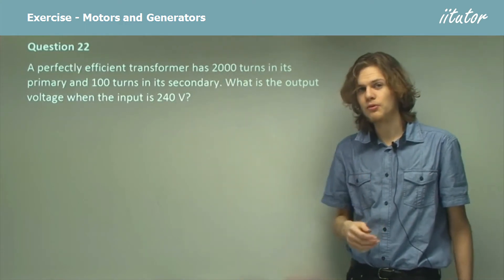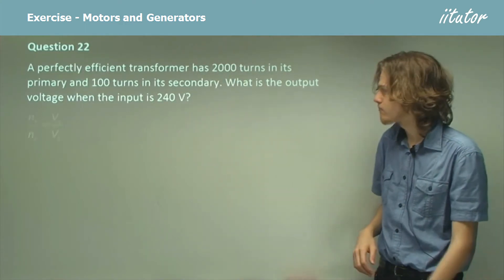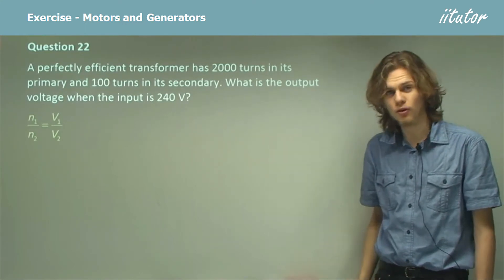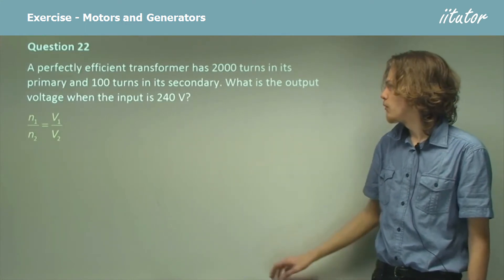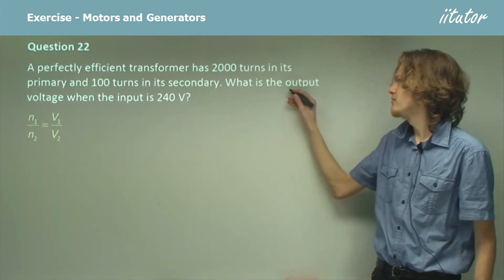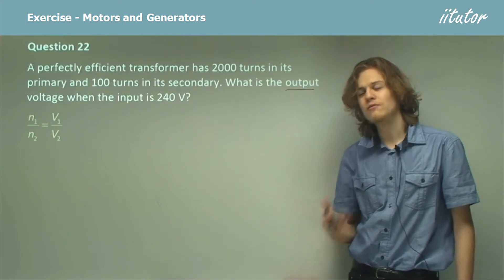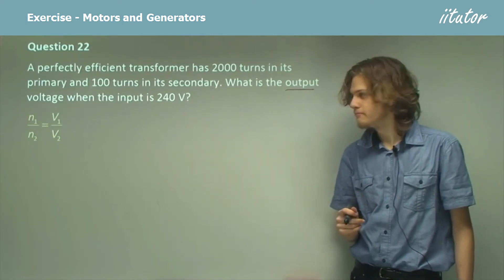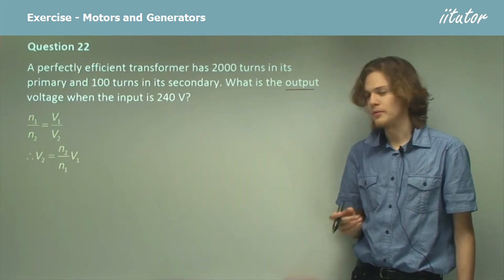So mathematically we can write that like this: N1 over N2 equals V1 over V2. Now what we're trying to find is the output voltage, that is V2. So we can rearrange our equation to make V2 the subject of the equation.